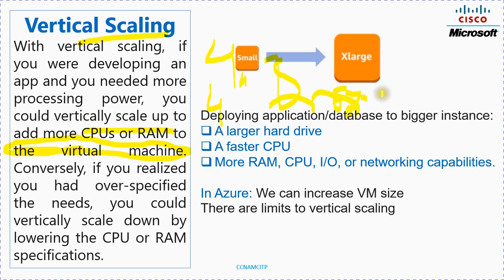Examples of vertical scaling include deploying an application or database to a bigger instance, a larger hard drive, a faster CPU, more RAM, or better CPU, I/O, or networking capabilities. In Azure, we can increase VM size, though there are limits to vertical scaling.